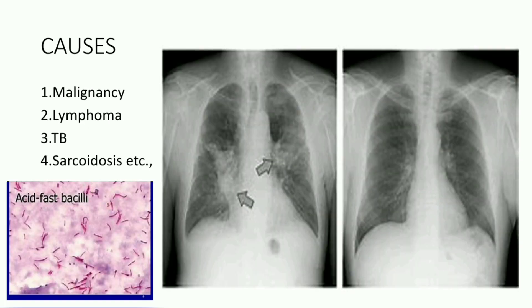So what are the causes of a positive D-spine sign? The causes are: 1) malignancy, 2) lymphoma, 3) tuberculosis, 4) sarcoidosis, and all other causes which produce a posterior mediastinal mass leading to direct continuity between the main stem bronchus and the vertebrae.